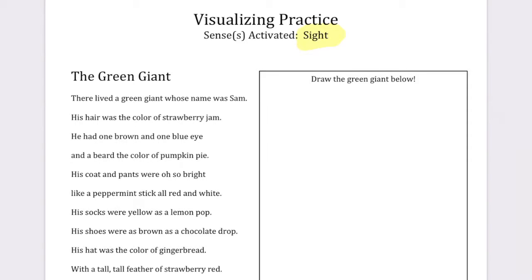There lived a green giant, so I know that the giant is green. His hair is the color of strawberry jam, which I know is red. He had one brown eye and one blue eye. He has a beard the color of pumpkin pie, which is orange. His coat and pants were oh so bright, like a peppermint stick all red and white, so he's wearing this red and white striped outfit. His socks were yellow as a lemon pop. His shoes are brown as a chocolate drop. His hat is the color of gingerbread, which is also brown.